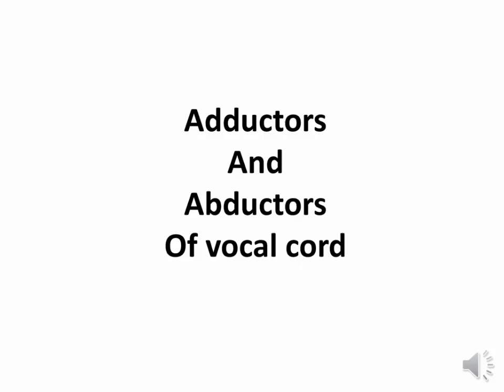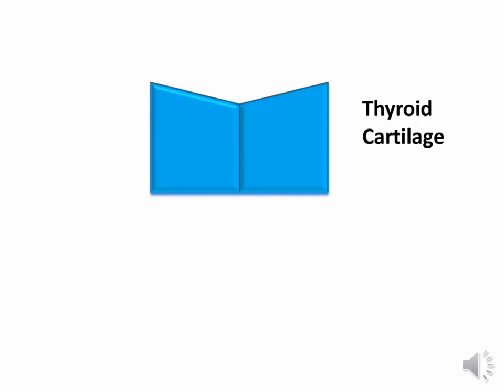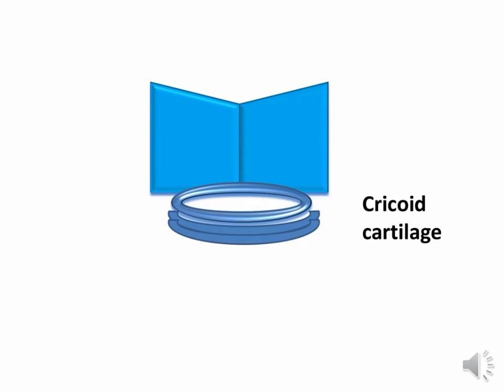Hi, let us see about the adductors and abductors of the vocal cord. The larynx is made up of thyroid cartilage - we are viewing the posterior aspect - and cricoid cartilage, which is thinner in the anterior aspect and thicker in the posterior aspect.